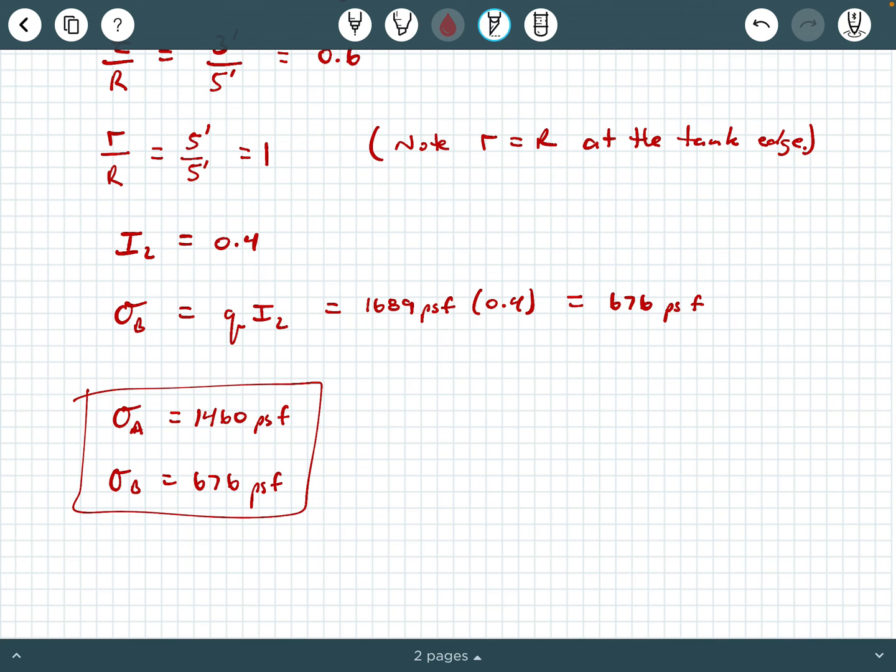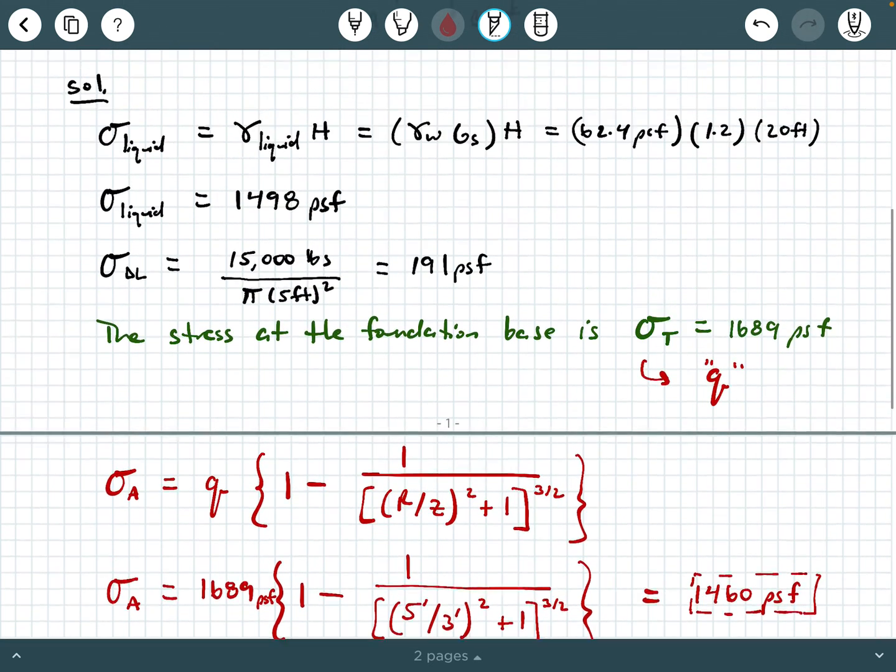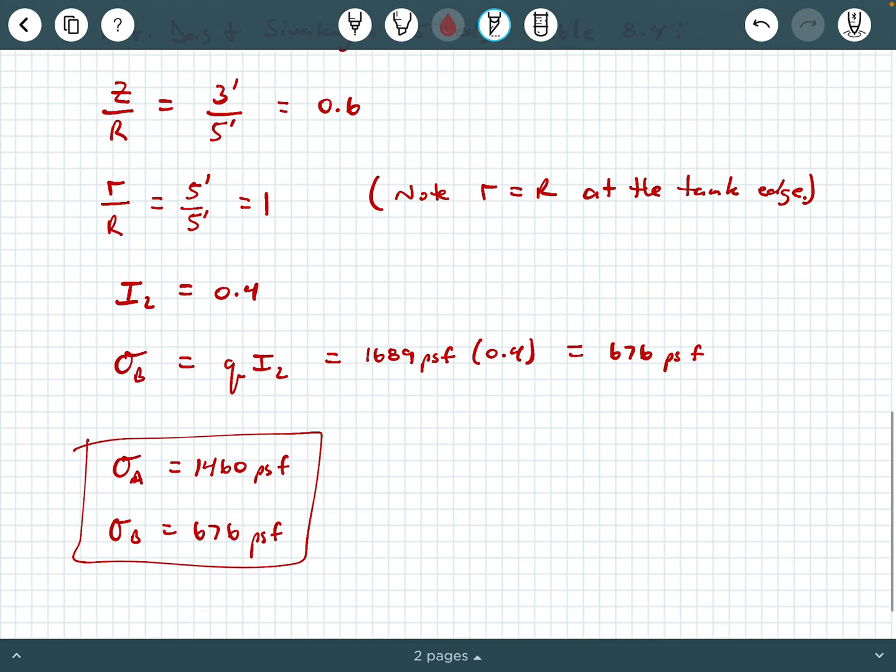So that's going to conclude this example. One last thing I want to point out, please don't get too upset with changing variables. There's a lot of sigmas and q's floating around here. You can just use different subscripts to denote different types of stresses.